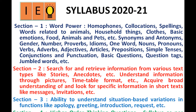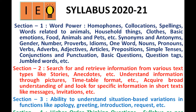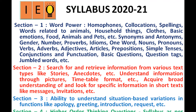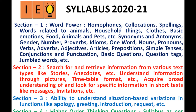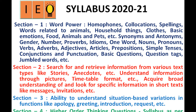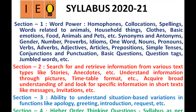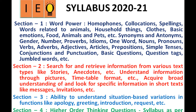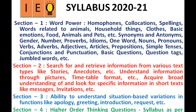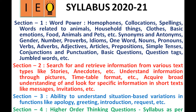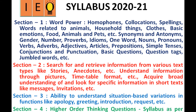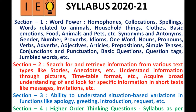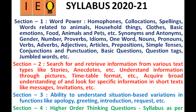Section 1: Word Power, Homophones, Collocations, Spellings, Words Related to Animals, Household Things, Clothes, Basic Emotions, Food, Animals and Pets, etc. Synonyms and Antonyms, Gender, Number, Proverbs, Idioms.